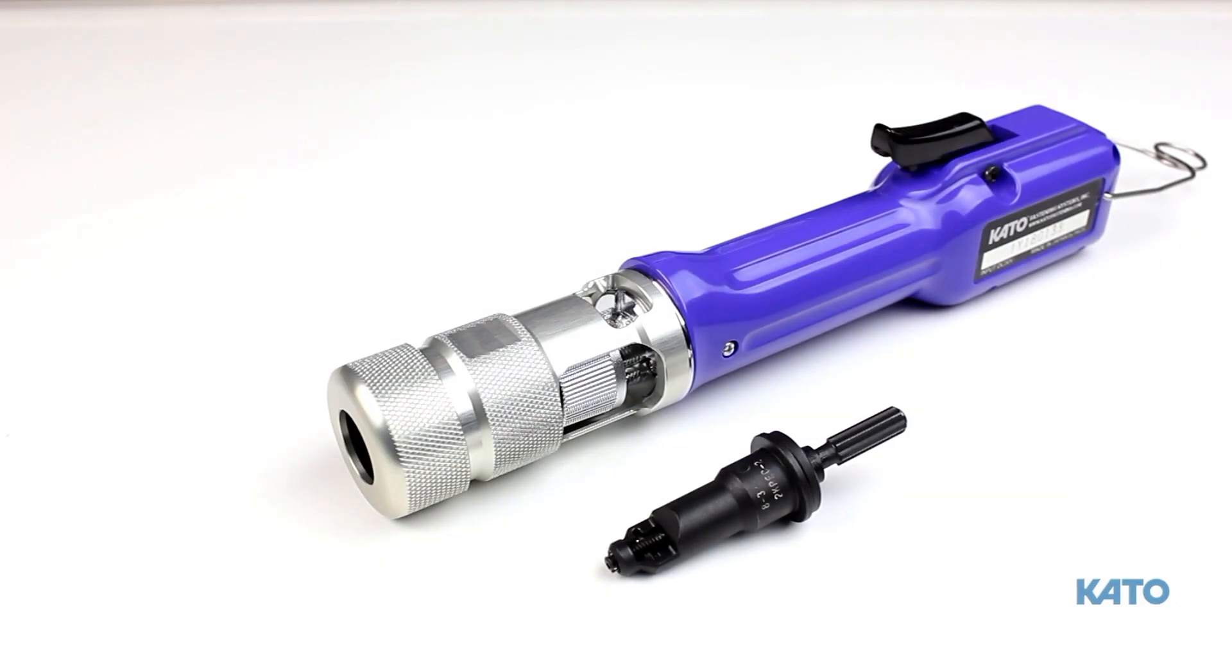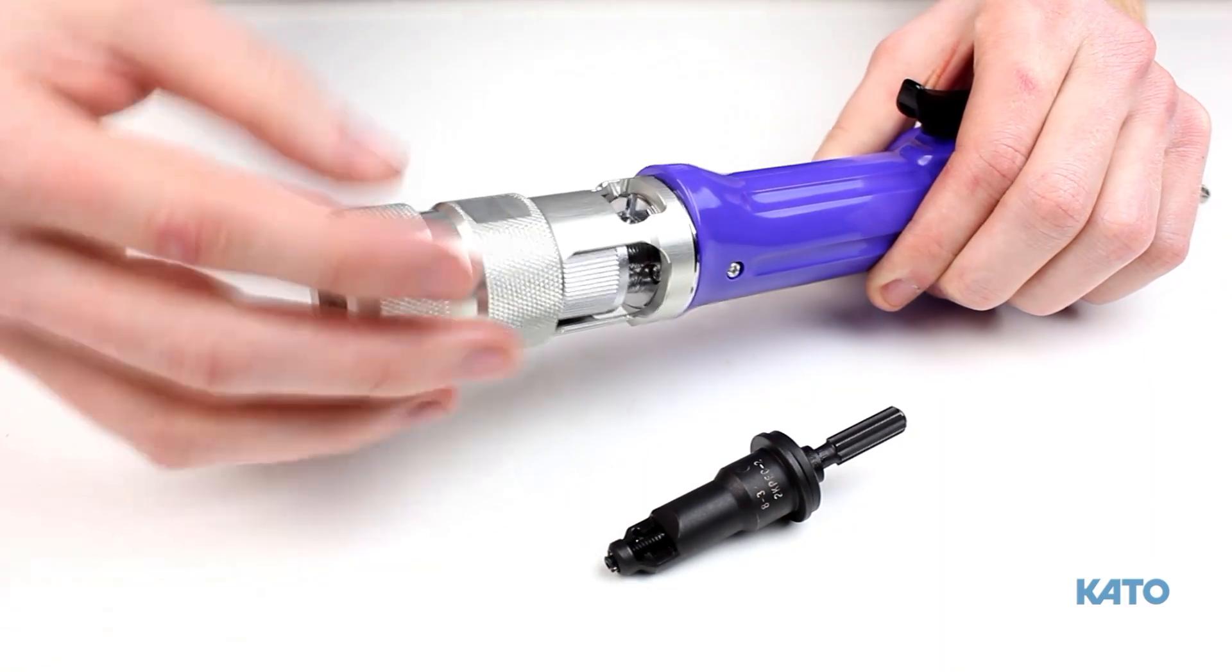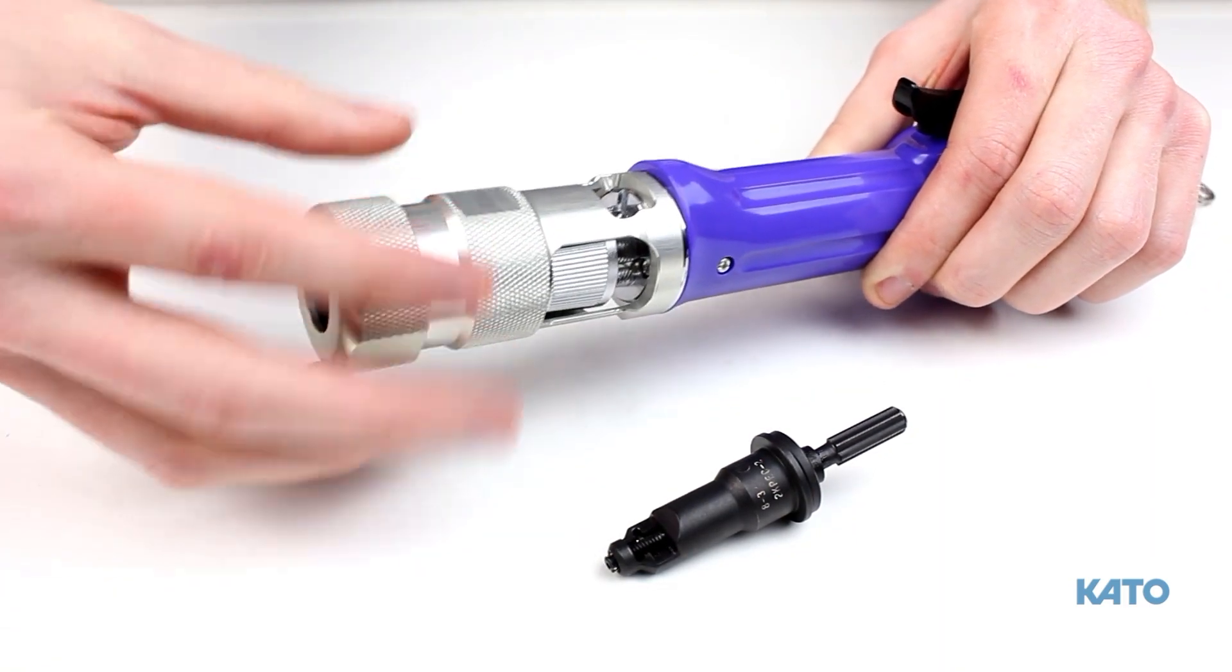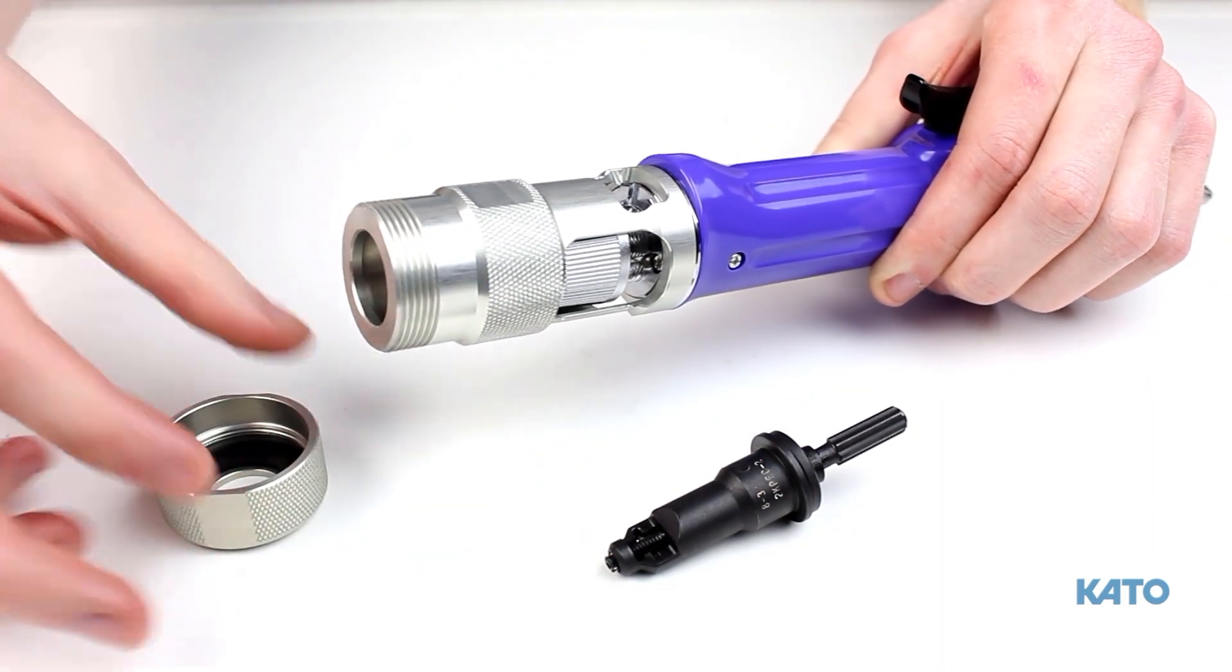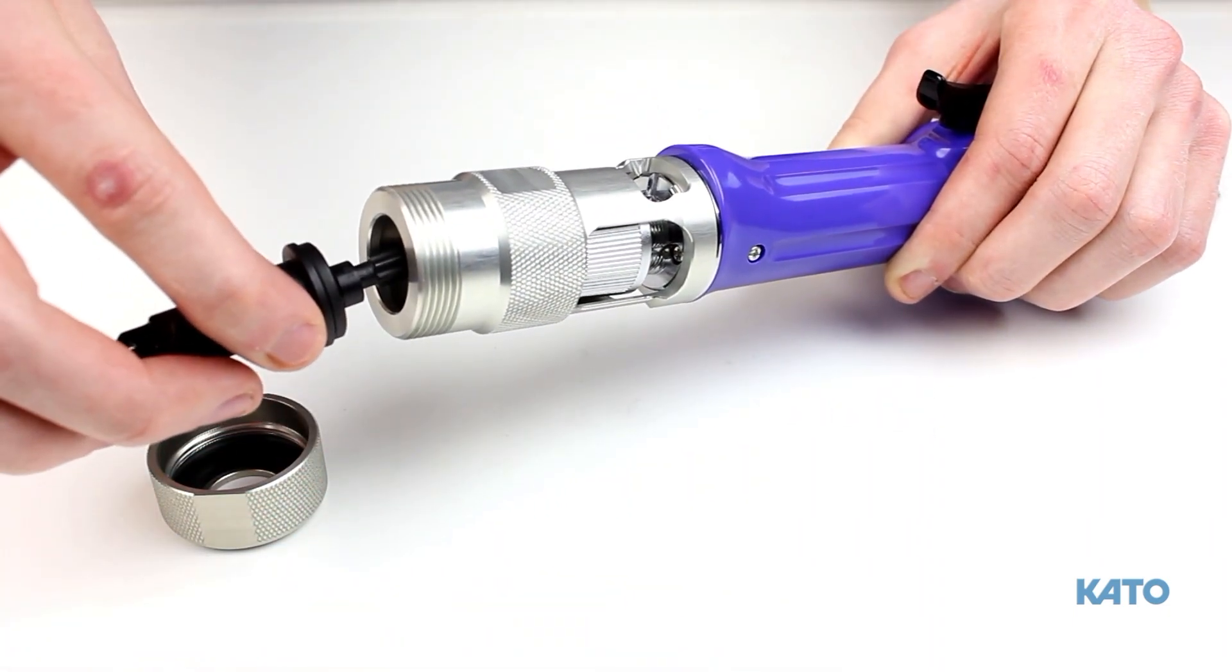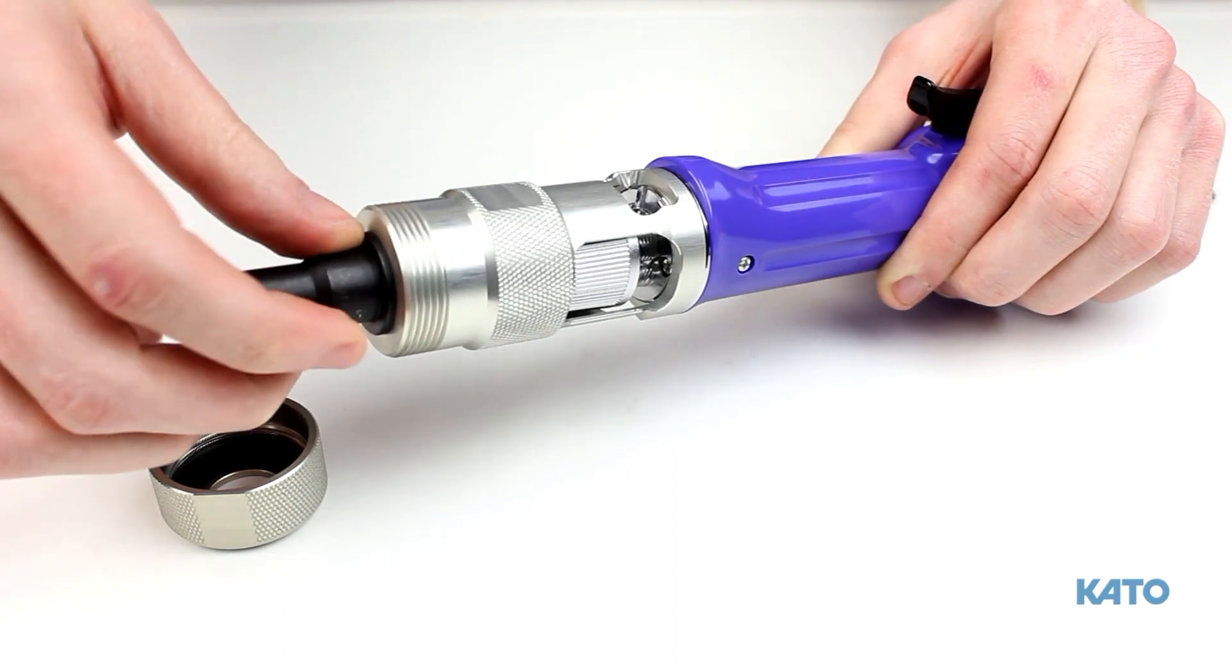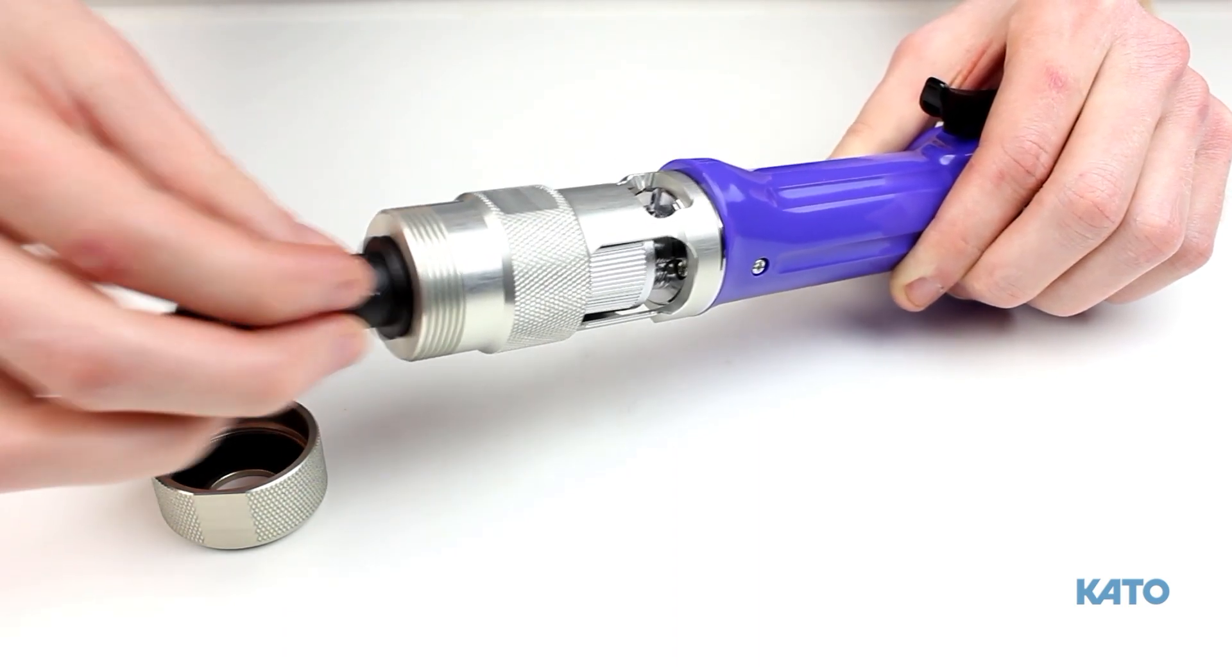To connect the front-end assembly, remove the lock nut from the end of the adapter. Remember the threads are left-handed, so turn clockwise. Slide the mandrel into the electric driver. You may need to rotate the mandrel a few flats to ensure proper alignment with the driveshaft. The mandrel should freely slide all the way into the driveshaft.